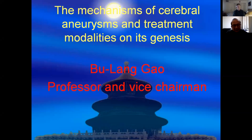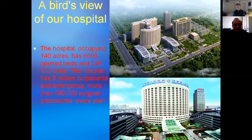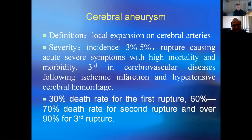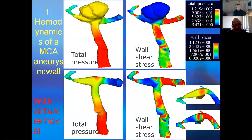This is a hospital overview. Cerebral aneurysm is actually a local expansion on cerebral arteries. It is very severe, and can cause death when it ruptures. This figure demonstrates the hemodynamics of the MCA aneurysm.